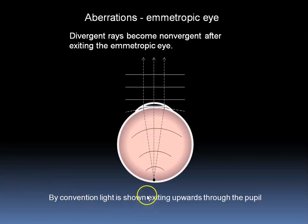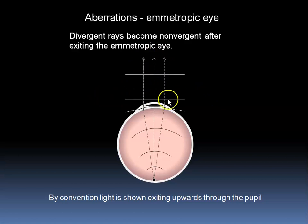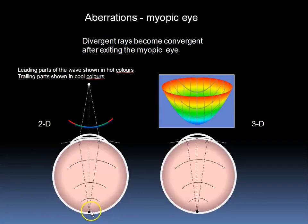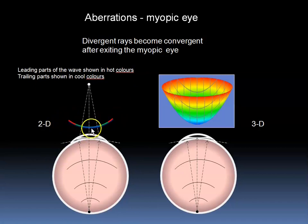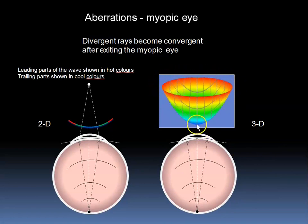When discussing aberrations of the eye, we by convention say that the light emanating from the retina is exiting upwards through the pupil. In this diagram, we show the retina conjugate with infinity and parallel rays or planar wavefronts are leaving the eye in this emmetropic eye. Here we see what happens in the myopic eye — the retina is not conjugate with infinity but with a point in front of the eye. In other words, the light leaving the eye is convergent. The wavefronts are convergent, and the rays form an image point at a finite distance away. This is the 2D image in which we show the most forward parts of the wave in red and the lagging parts in blue. In the 3D diagram here, we show a wavefront of light where the leading parts are shown in the warmer colors and the lagging parts in cooler colors.